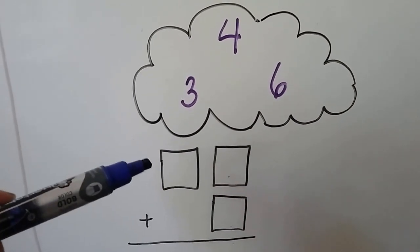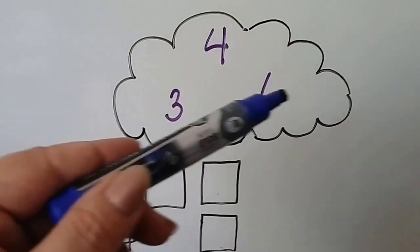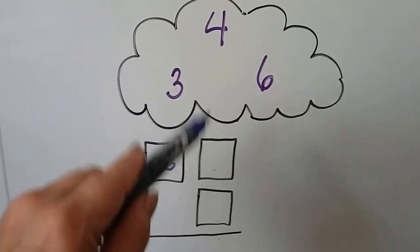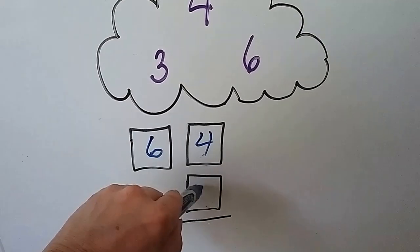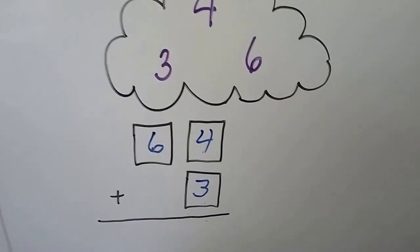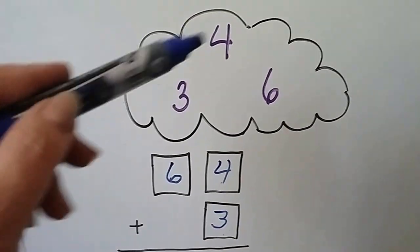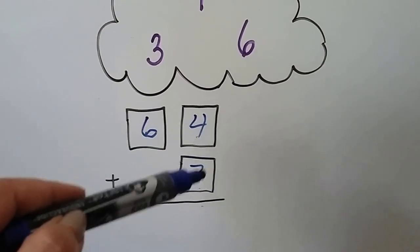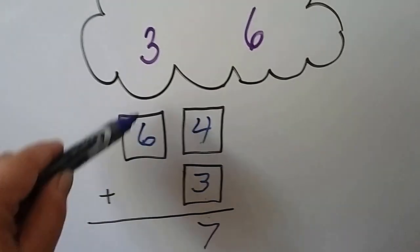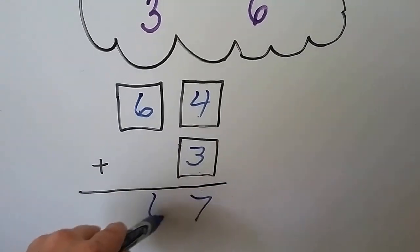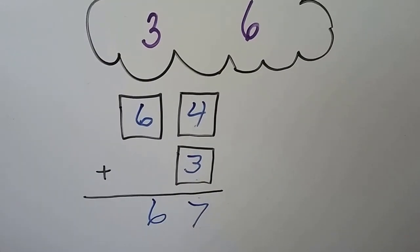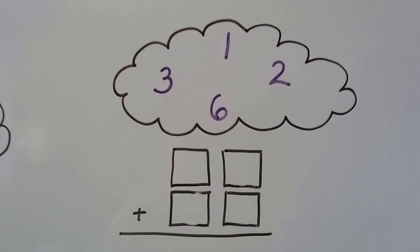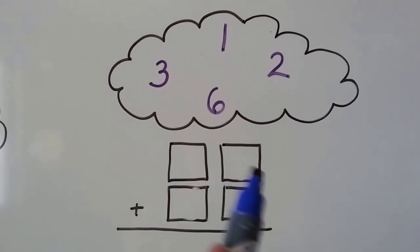We use the largest number of tens. Let's try that again. We have a four, a three, and a six. We want to get the greatest sum, so we need the largest number of tens. Let's put the six, which is the largest number, in the tens place. Then we can put the four and the three into the ones place. Four, five, six, seven — we have seven ones. We drop down the six because there's no tens to add to it. We get a 67.